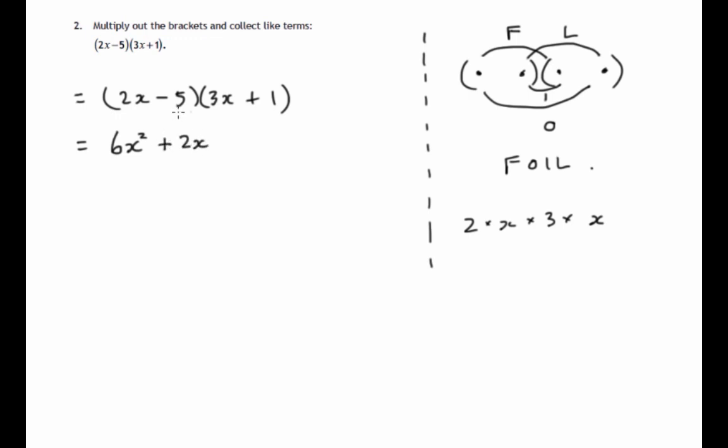The inside two, now watch out, that includes the negative. So it's negative 5 times 3x. So the answer is going to be negative. Negative times positive is negative. Five threes are 15x.